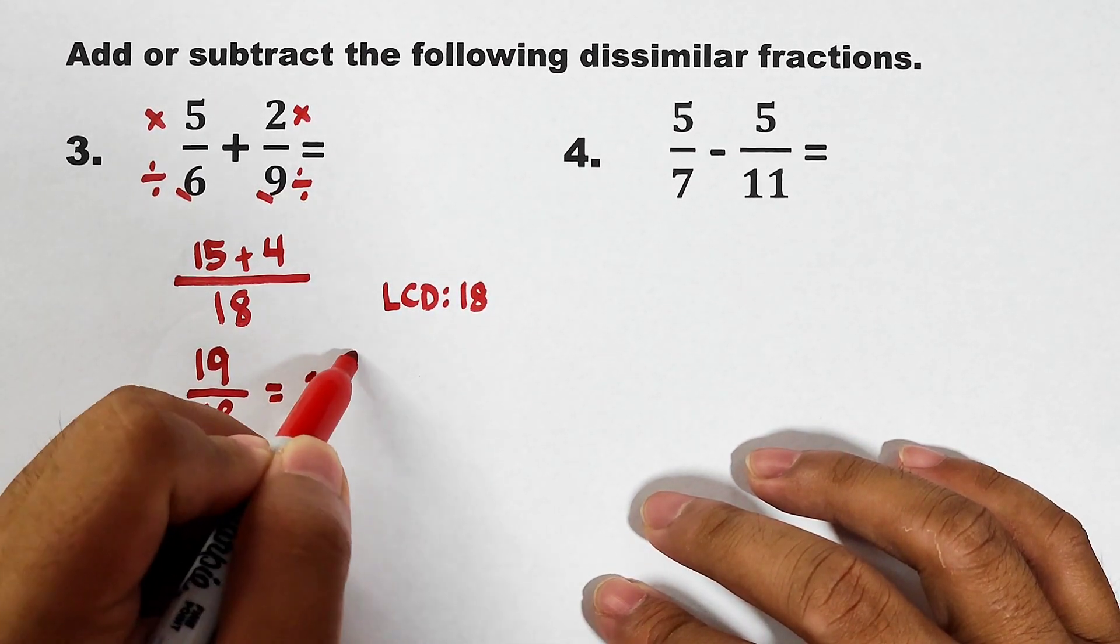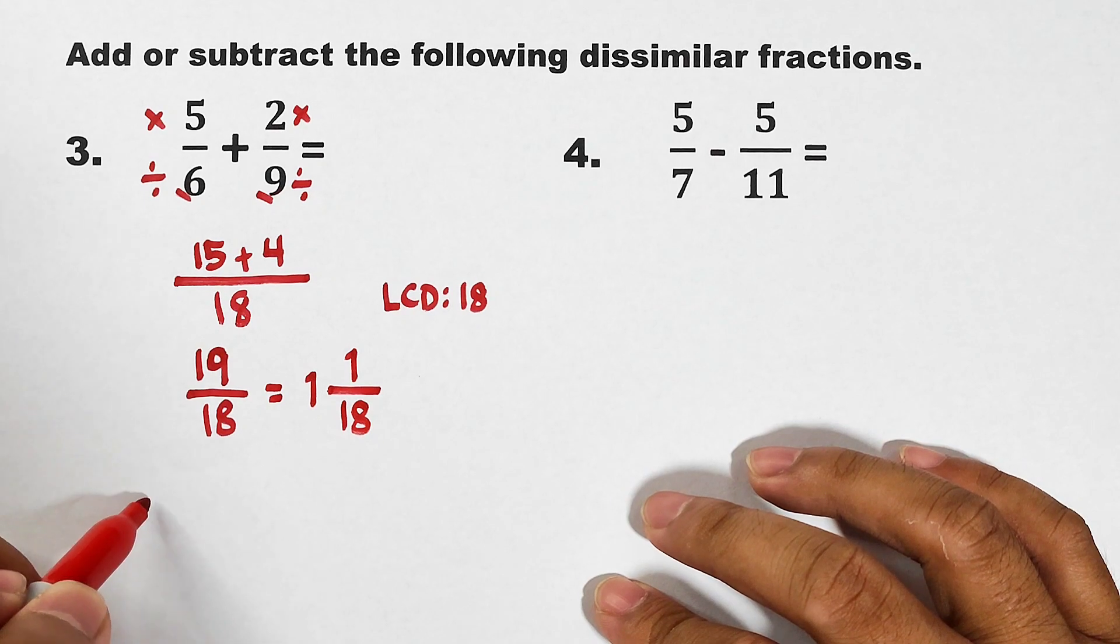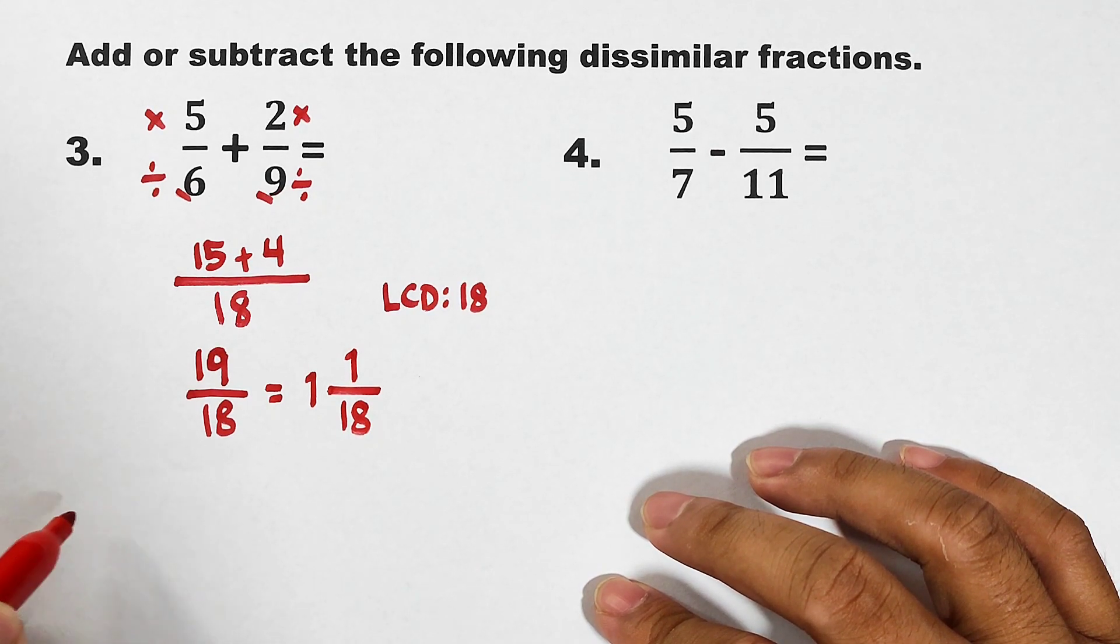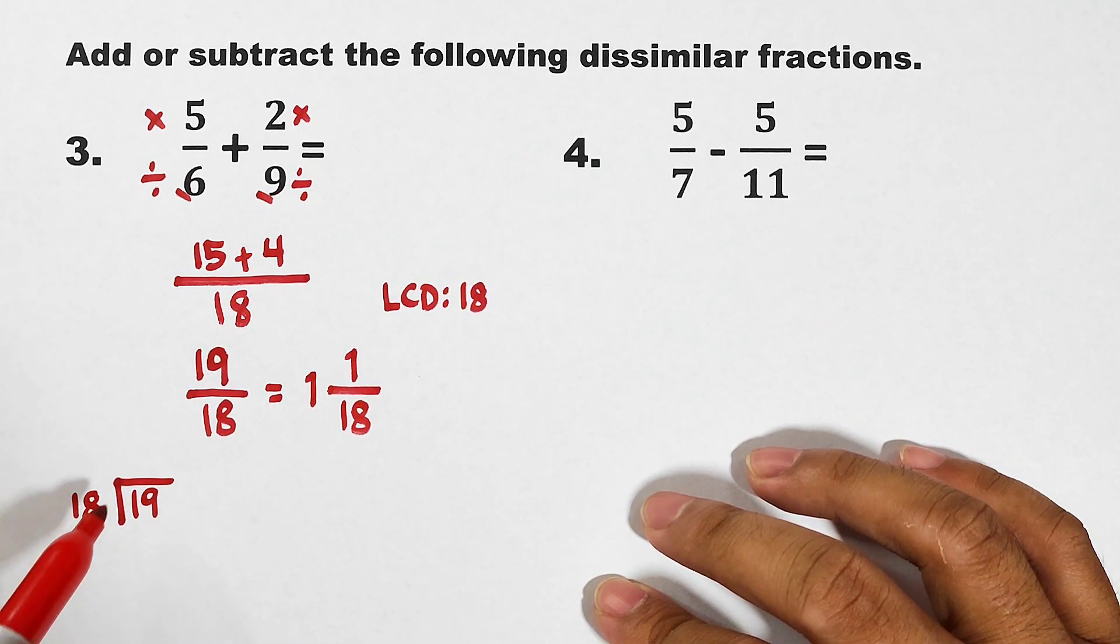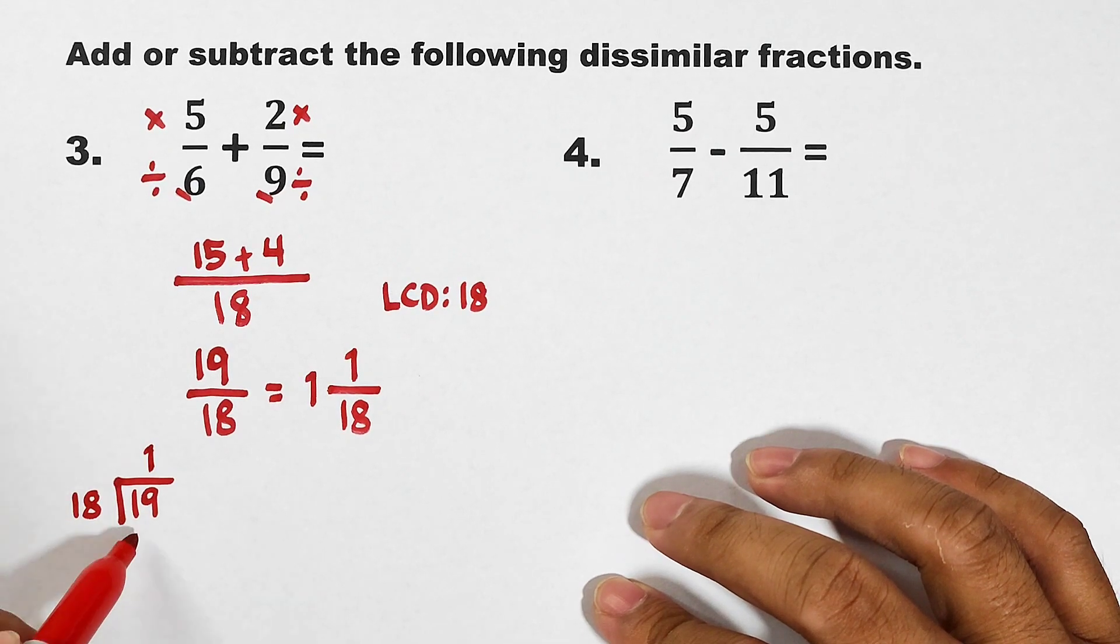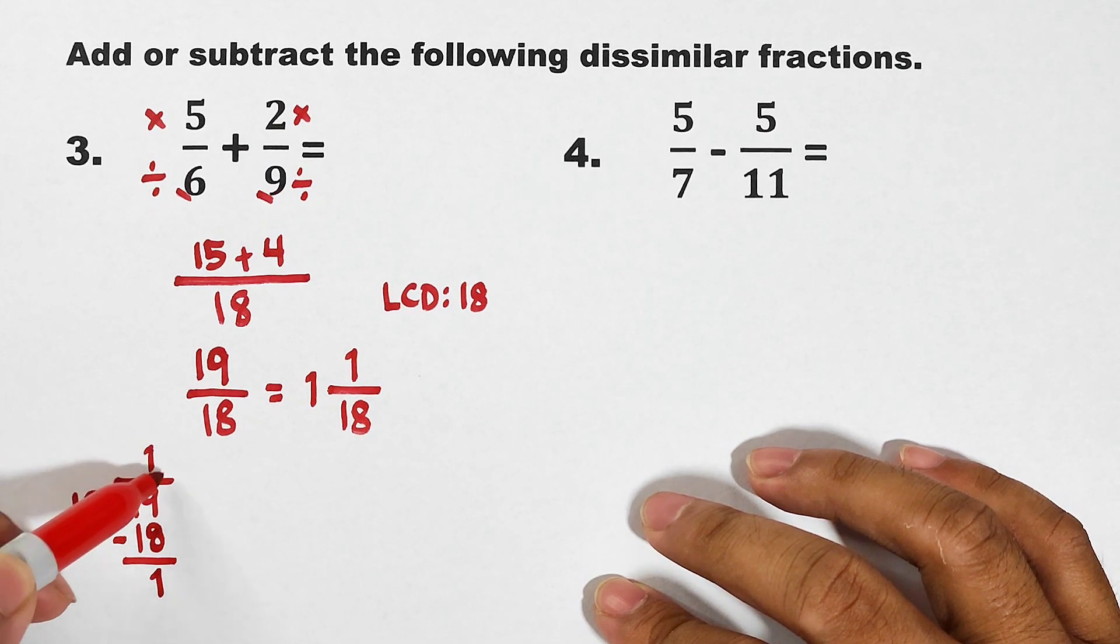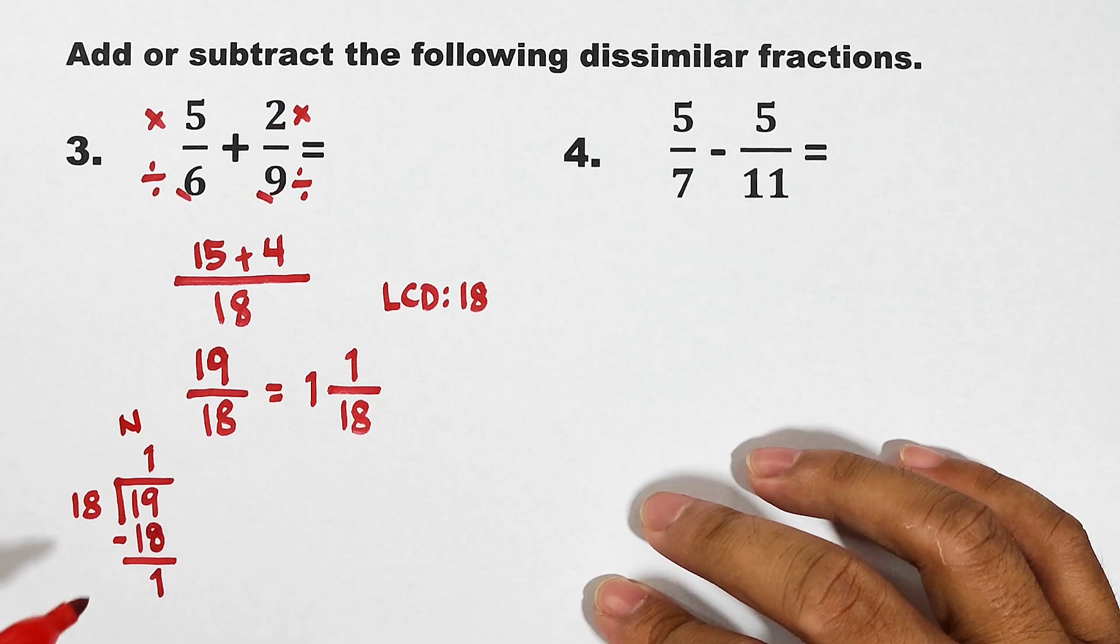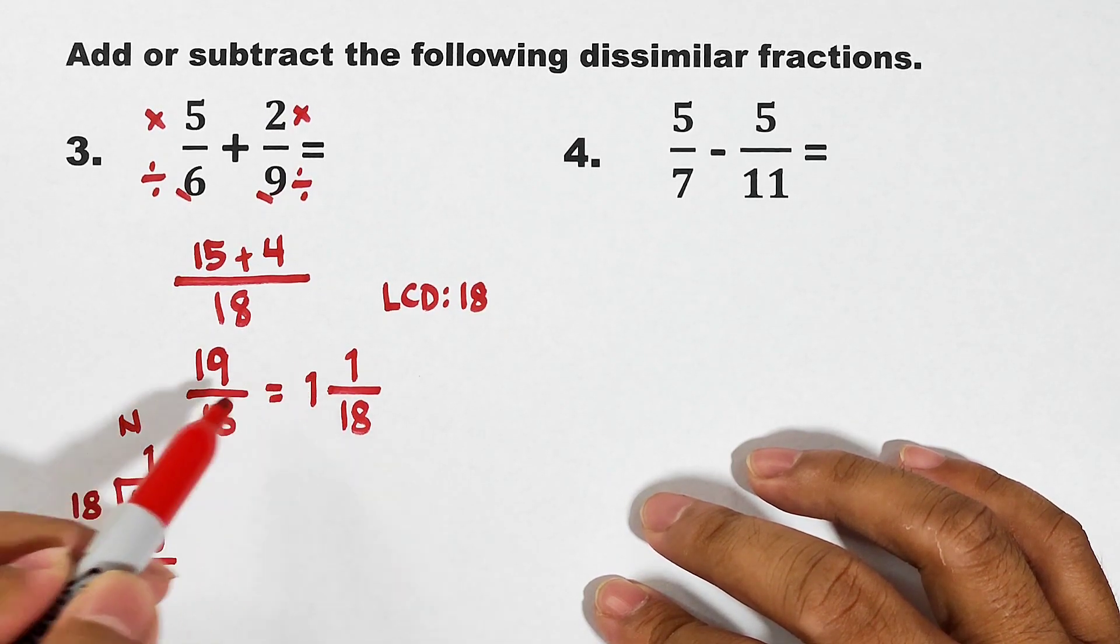So, paano nangyari yun? Gato lang sya. Turo ko sa inyo. So, we have here your 19 inside this box. And your divisor is 18. So, what will happen is 19 divided by 18 is 1. 1 times 18 is 18. Subtract this. 19 minus 18 is 1. So, paano yun? This one, or the quotient at the top, is your numerator. Ito sya. Your remainder, ah sorry, this one, your quotient is the whole number.